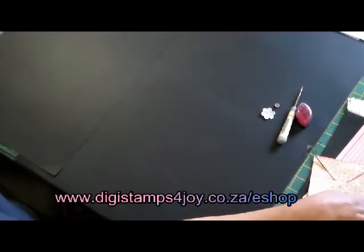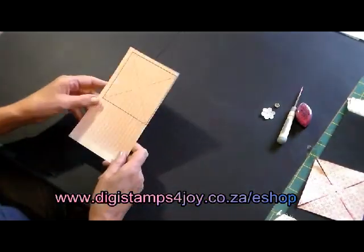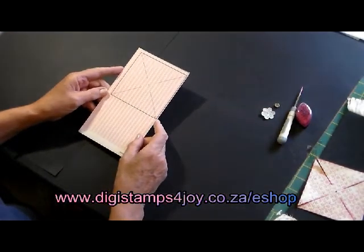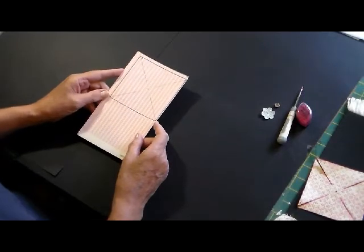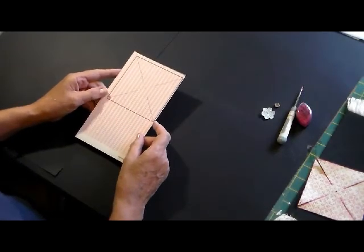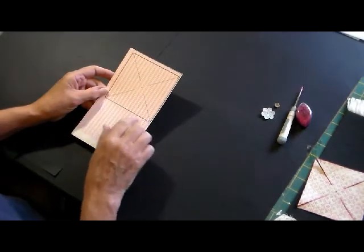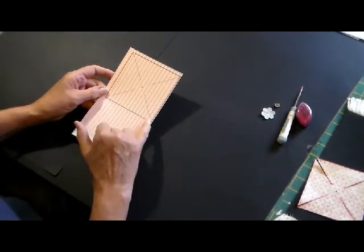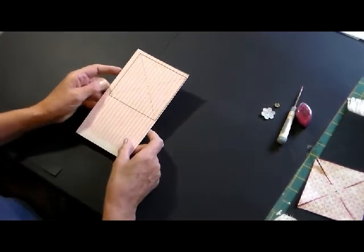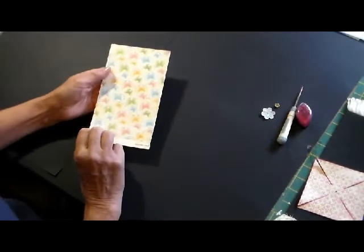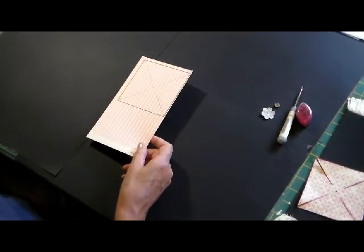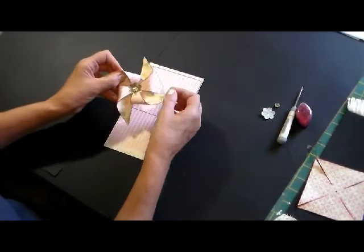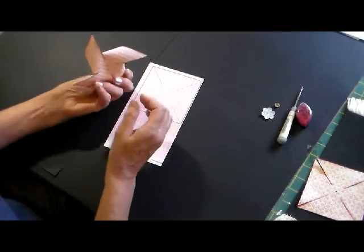The first thing you need to do is go to digistampsforjoy.co.za slash e-shop and download the freebie for the pinwheel flower. It's basically just a square box, 10 centimeters by 10 centimeters, printed out onto double-sided card. You're going to need the double-sided card because when you fold the corner over, you see the back of the card.